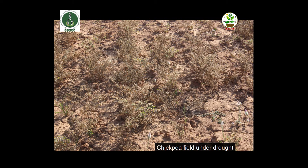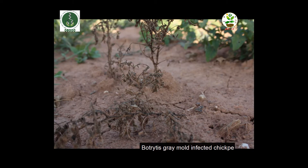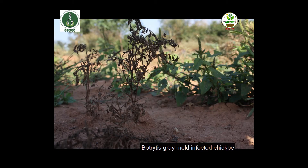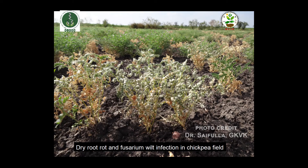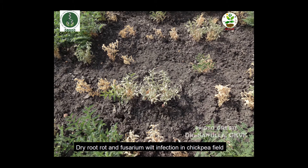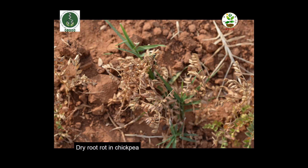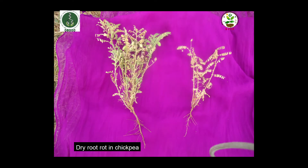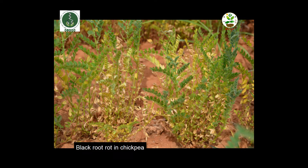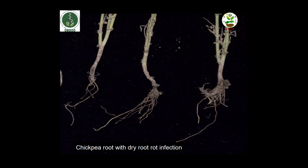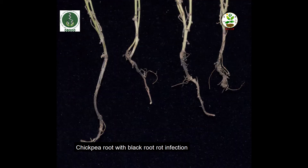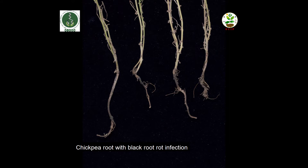Drought stress affects the incidence of disease, especially root rots in chickpea. We observed this earlier in the farmer's field. Among fungal diseases, chickpea is highly vulnerable to dry root rot and black root rot. Dry root rot infection causes drying of roots or loss of taproot. Black root rot causes loss of secondary roots and blackening and rotting of roots.